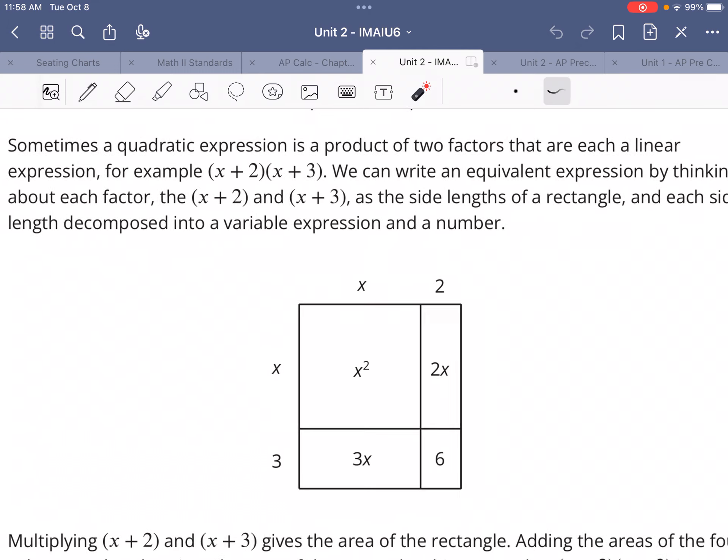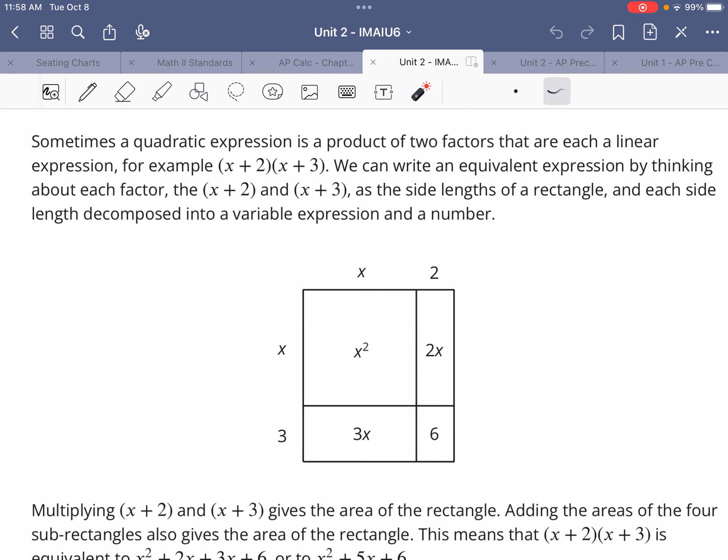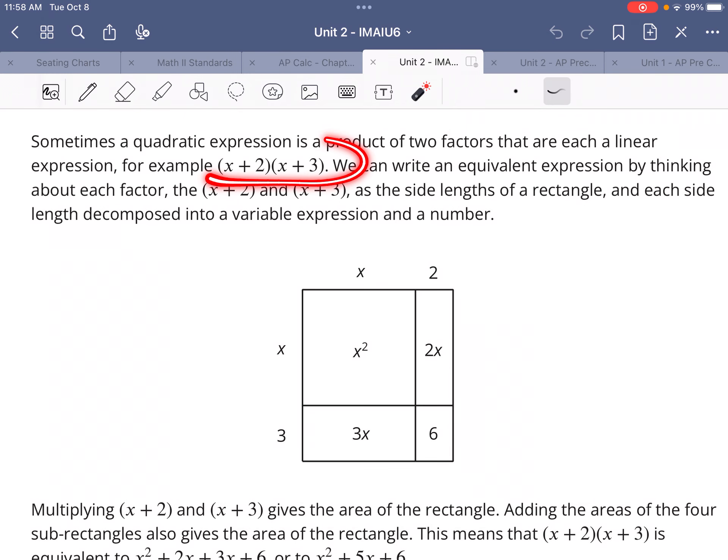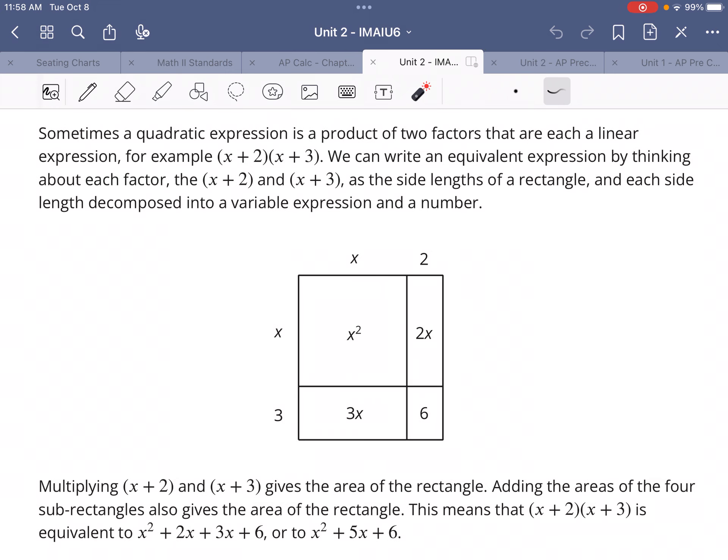Sometimes a quadratic expression is a product of two factors that are each linear. So we have (x + 2) and (x + 3). Those are two linear factors and we can write them as (x + 2)(x + 3). For us to be able to figure out how to multiply this out, sometimes it's helpful to draw a diagram. So here we have a rectangle where one side is x plus 2 and this side is x plus 3.